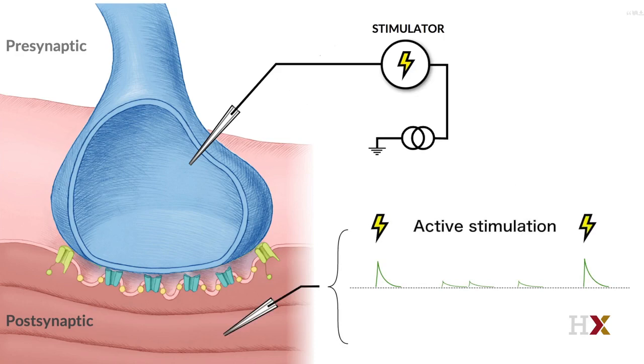However, interestingly, it was what happened in between periods of actively stimulating the presynaptic neuron that gave Katz one of his most important clues to the nature of synaptic transmission. Using highly sensitive amplifiers to magnify the tiny signals from the neurons, Katz noticed small spontaneous blips in the voltage recorded in the absence of any stimulus. While many might have dismissed these blips as simply being noise from the experimental setup, Katz's careful observation convinced him otherwise.